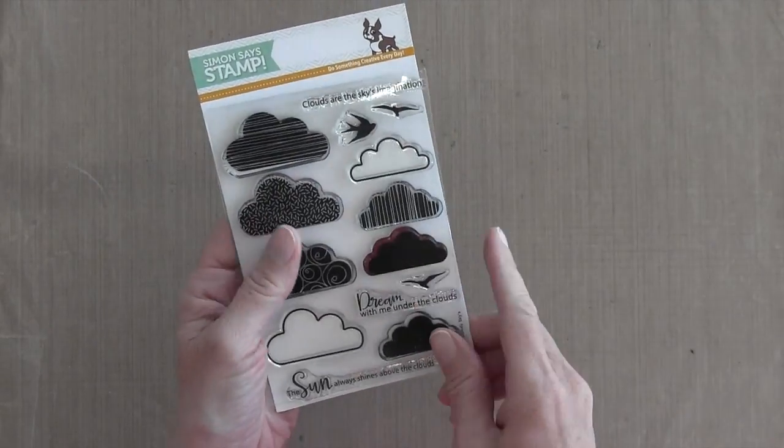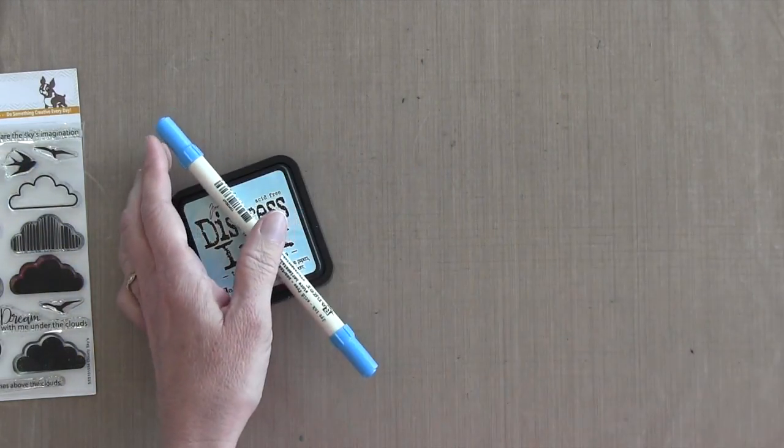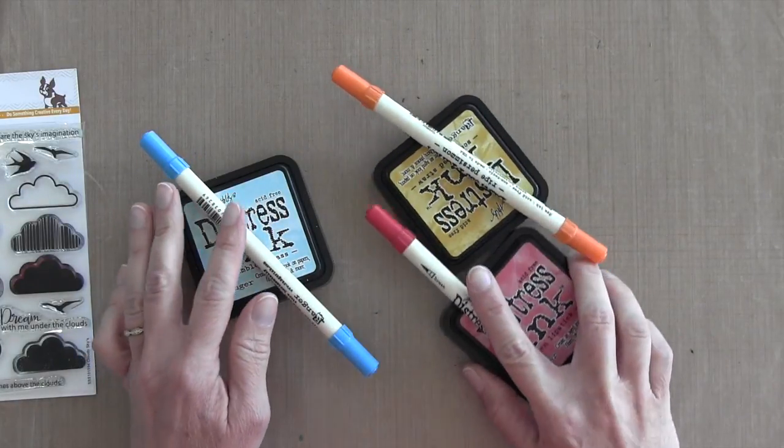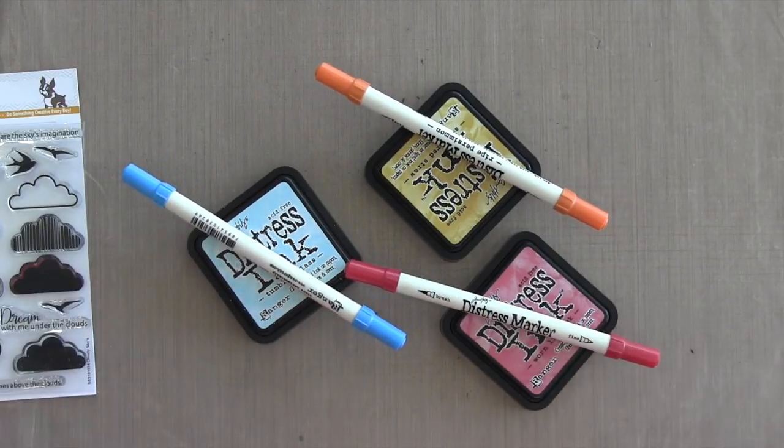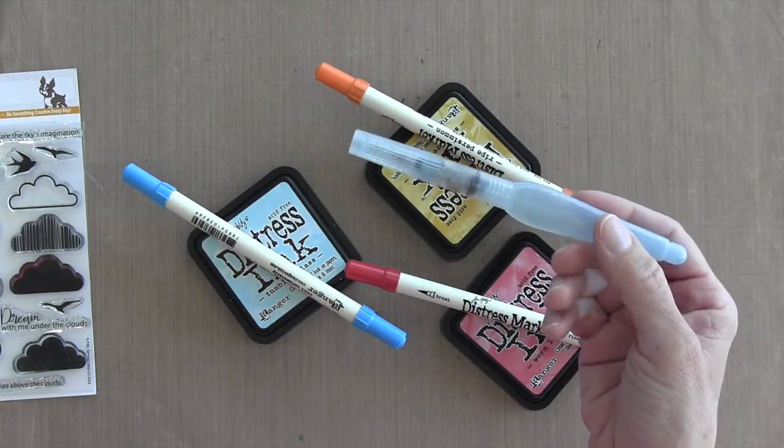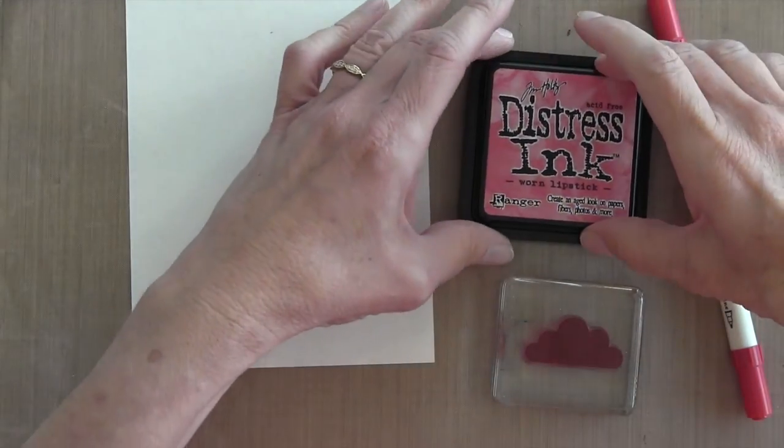So here's the set and I'm using this solid cloud right here. What you want to do is use an ink pad and a marker, and the marker should be one shade darker than the ink pad. So I have tumbled glass with a salty ocean marker, scattered straw with a ripe persimmon marker, and worn lipstick with a barn door marker. The other thing you'll need is an aqua painter or you can use a paintbrush with some water.